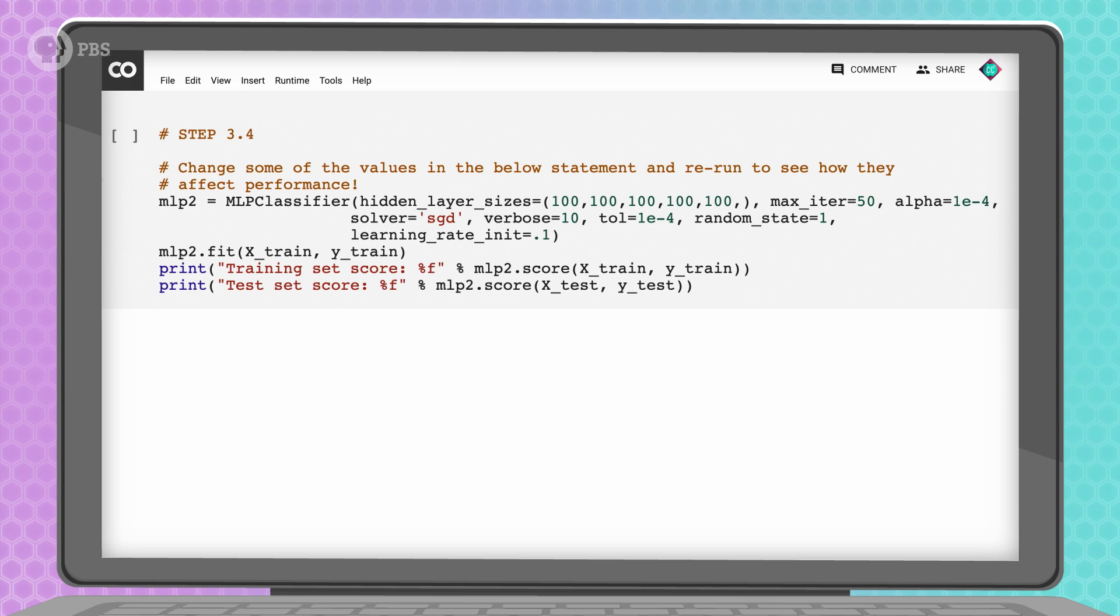We can play around with the structure here to see what happens. For now, let's try creating a neural network that has 5 hidden layers of 100 neurons each. And, we'll train it over 50 epochs. It'll take a few minutes to run.